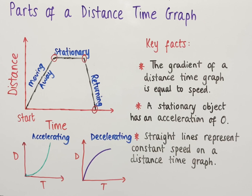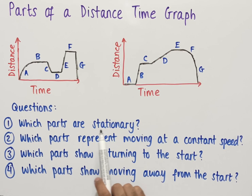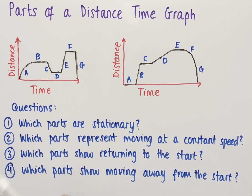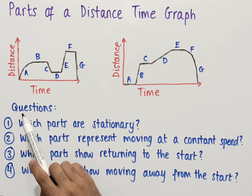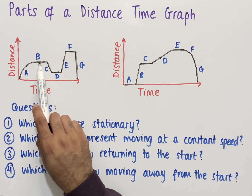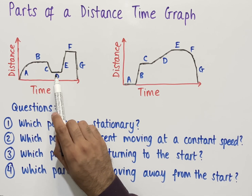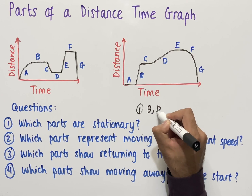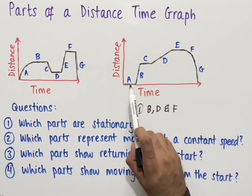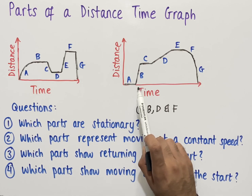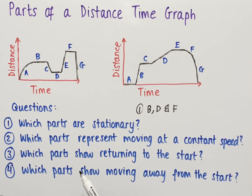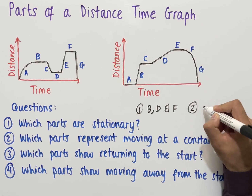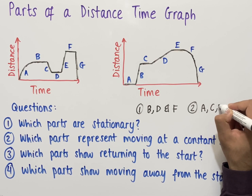Let's look at some examples. The first question asks which parts are stationary. Remember, the stationary parts are where the line is completely horizontal. In the first graph the line is horizontal at b, at d, and at f — so for graph one the answers are b, d, and f. For the second graph we look for horizontal sections, which are a, c, and e — so for graph two the stationary parts are a, c, and e.